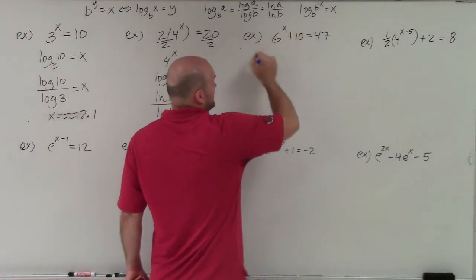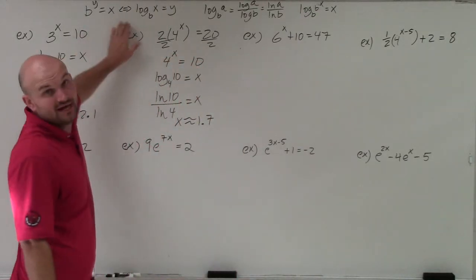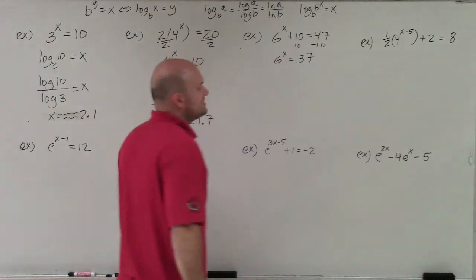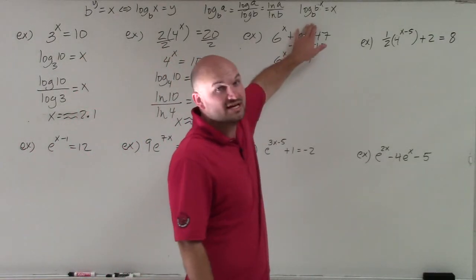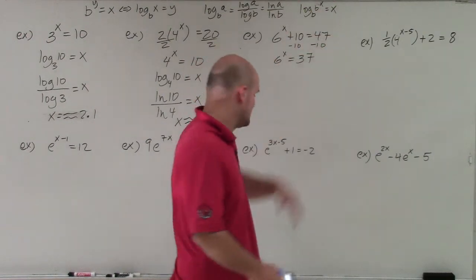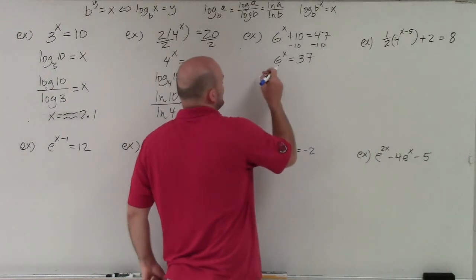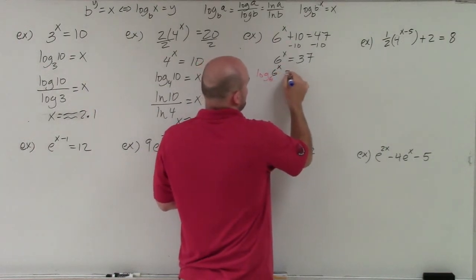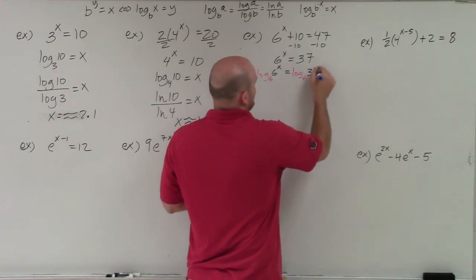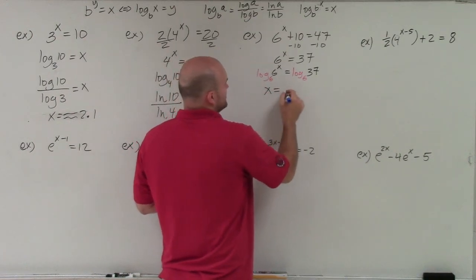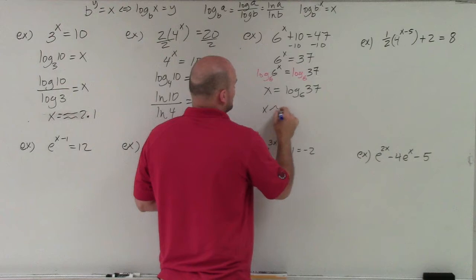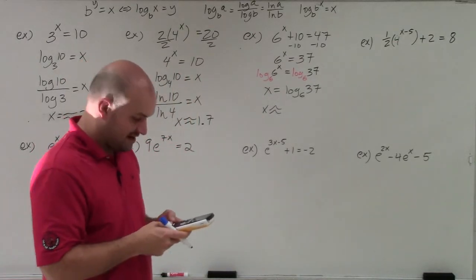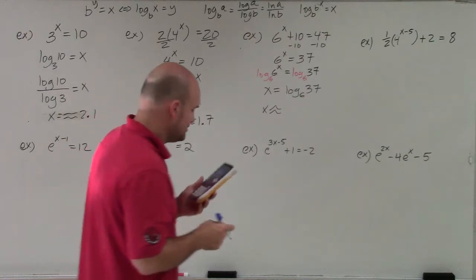In the next example, the exponent is 6 to the x, so I need to isolate it. I subtract 10 from both sides to get 6 to the x equals 37. Many textbooks have you take the log of both sides: log base 6 of 6 to the x equals log base 6 of 37. Since log base 6 of 6 to the x is just x, we get x equals log base 6 of 37. Using the change of base formula — log of 37 divided by log of 6 — gives approximately 2.